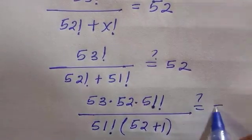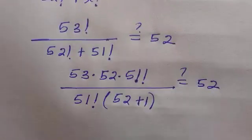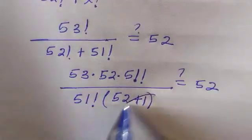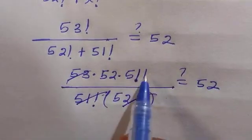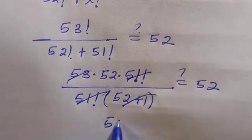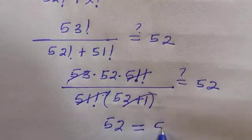From the numerator and denominator, 51 factorial cancels with 51 factorial, so we are left with 53 times 52 divided by 53 equals 52, which proves that x equals 51 satisfies this problem.